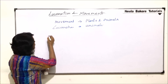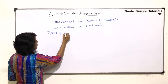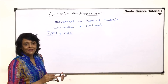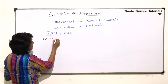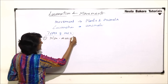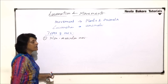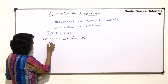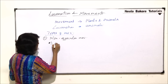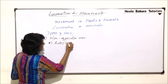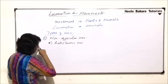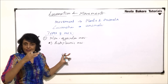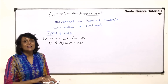When we come to the types of movements, we can classify them into two categories. The first is non-muscular movement — as the name tells us, there is no involvement of muscles. Examples include protoplasmic movement, where the cytoplasm moves in a circular form, which we also call cyclosis.